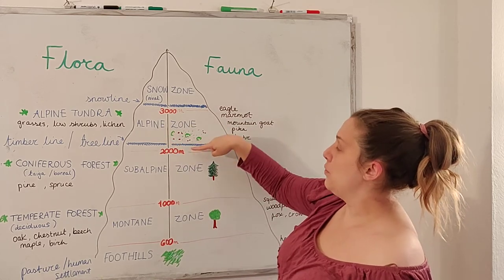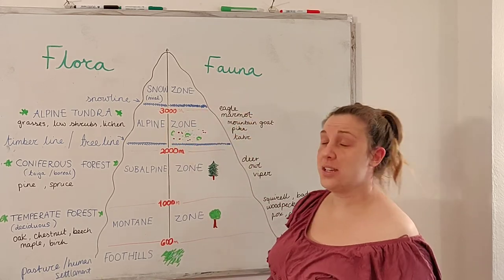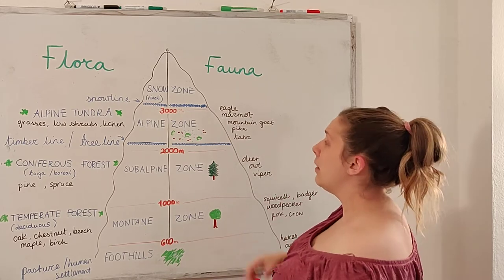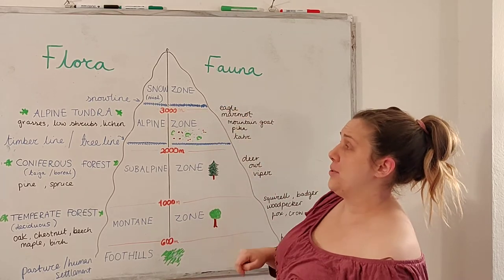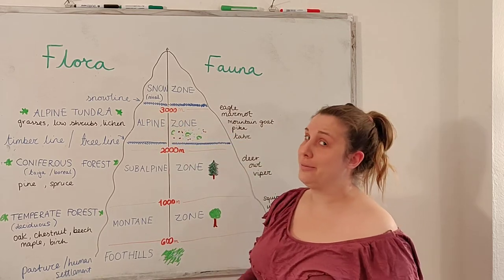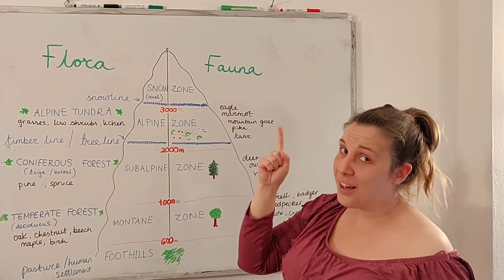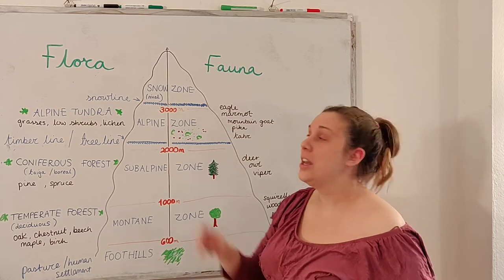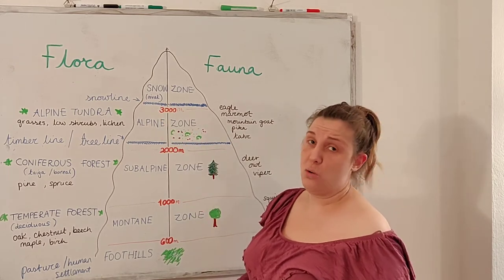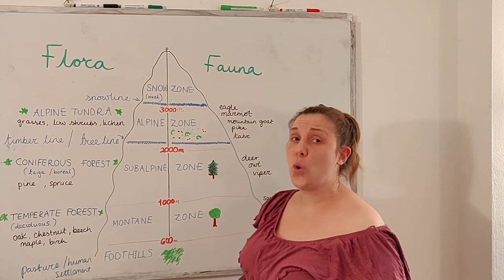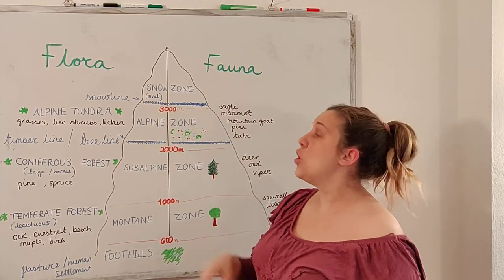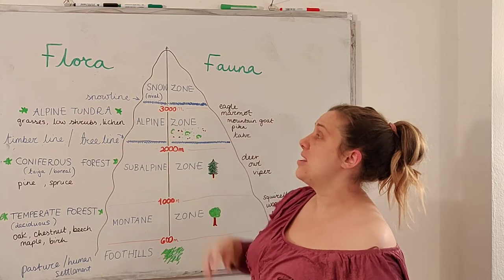This zone from 2000 to 3000 metres is called the alpine zone. Above 3000, another line — the snow line. Above the snow line, just snow. Above this line there is no summer, no winter, no autumn, no spring. It's cold all the time. It's called the snow zone, or sometimes the nival zone.